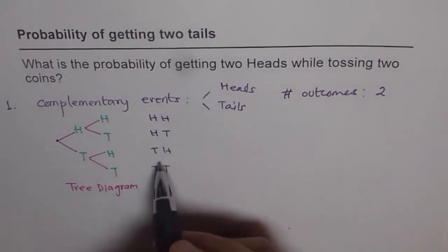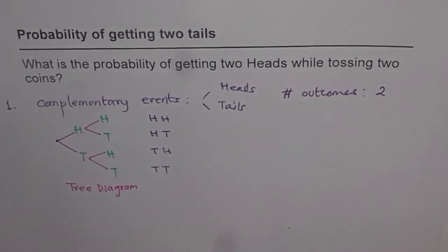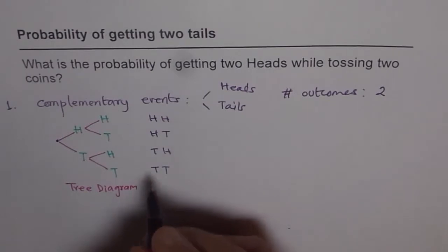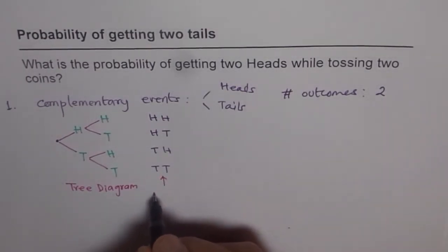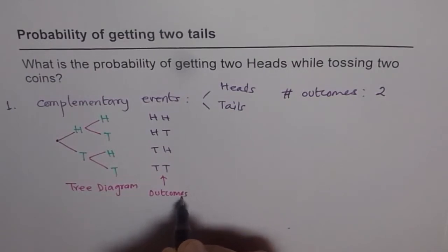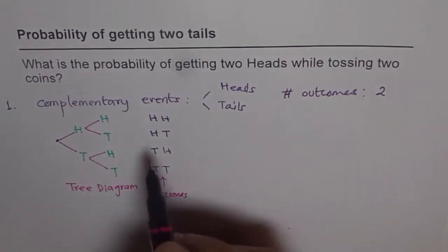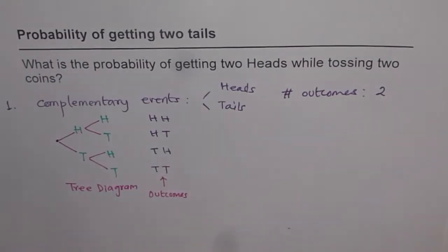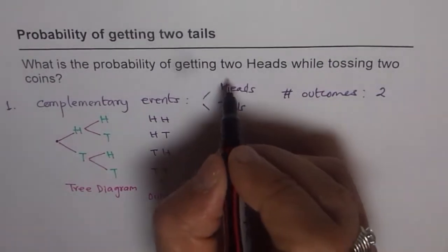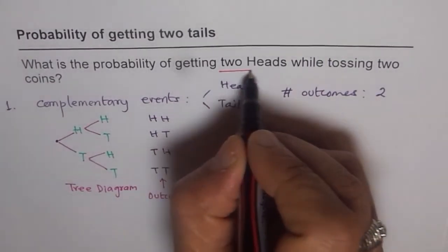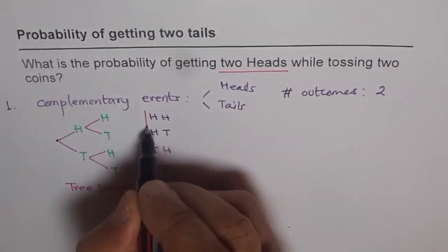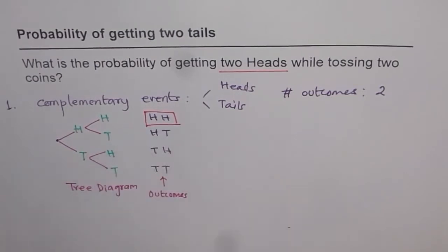So these are our outcomes. We can write these as outcomes — there are, in all, four outcomes. Out of four outcomes, how many are favorable to us? We need two heads, so the favorable outcome for us is only one.